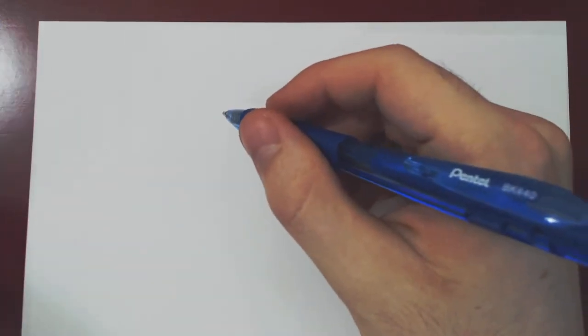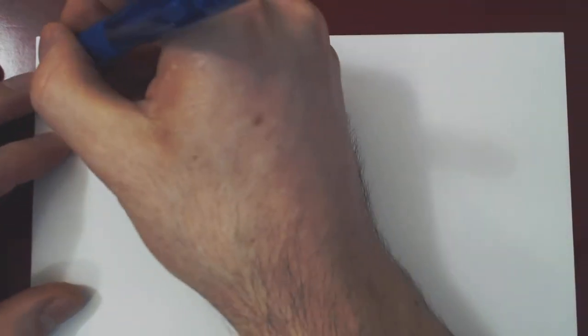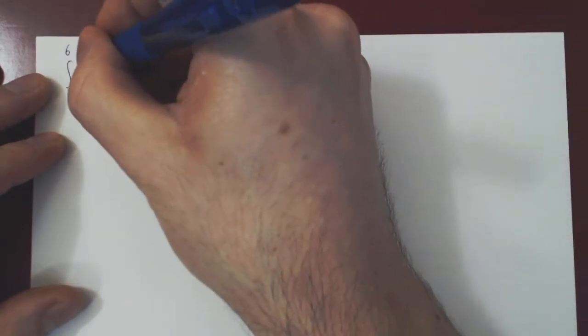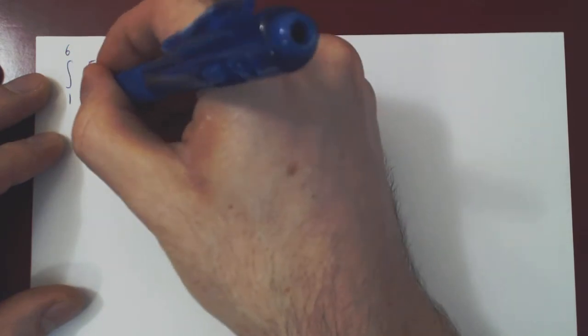Okay, so in this video we will consider another subtle choice of a u-substitution. But first, let's begin with a simple, now definite integral. So suppose we're asked to integrate from 1 to 6, 5x minus 4 over the square root of x dx.